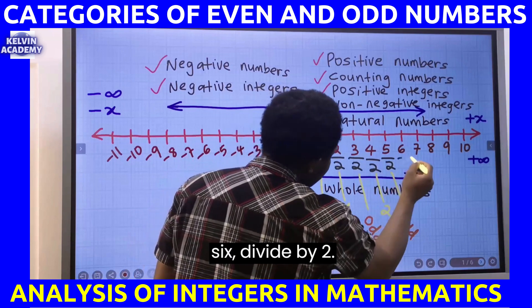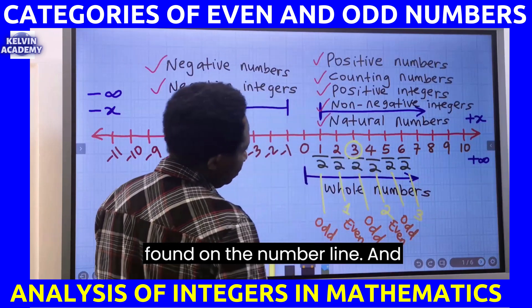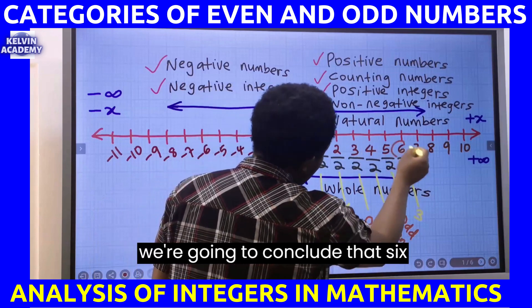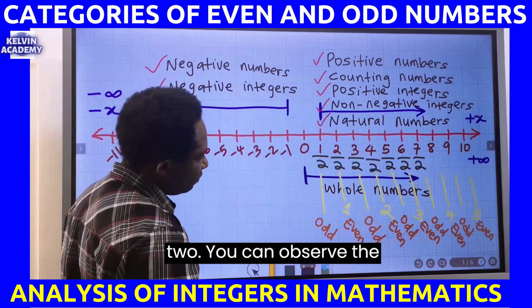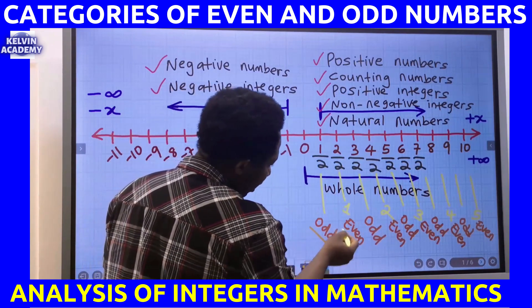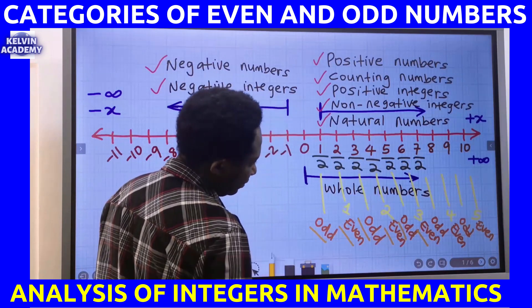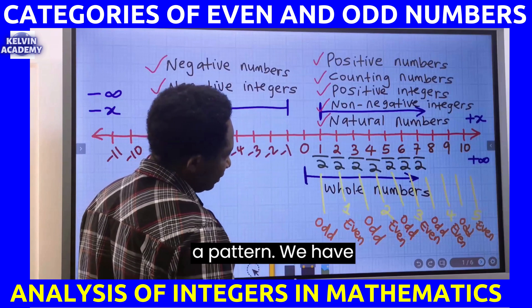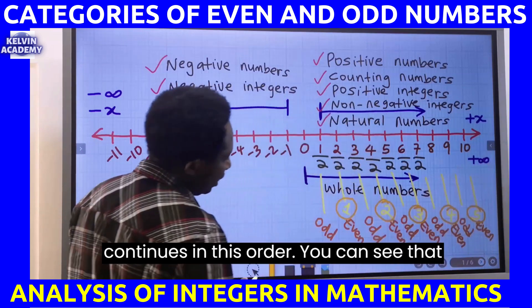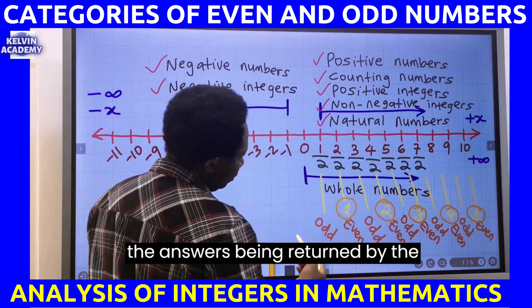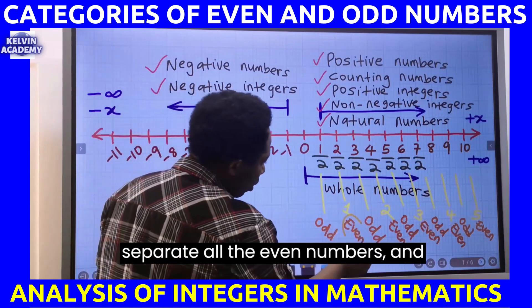Next, six divided by two returns the integer three. Three can be found on the number line, so six is an even number. Next, seven divided by two — you can observe the fluctuation: odd, even, odd, even, odd, even, odd, even, and it continues like this. You can also observe a pattern: one, two, three, four, five, and the answers returned by the even numbers can form another number line if we separate all the even numbers.